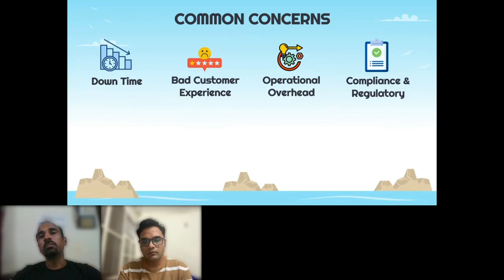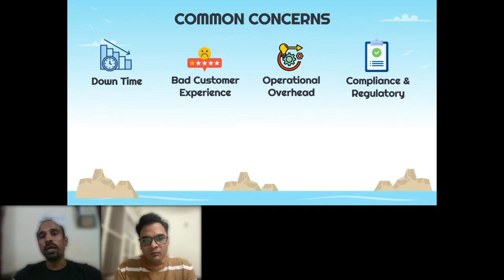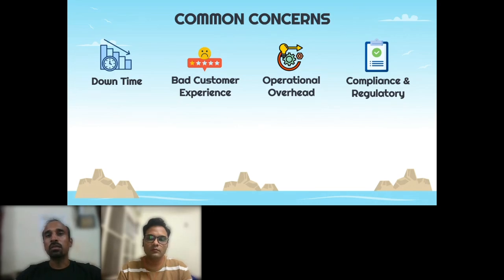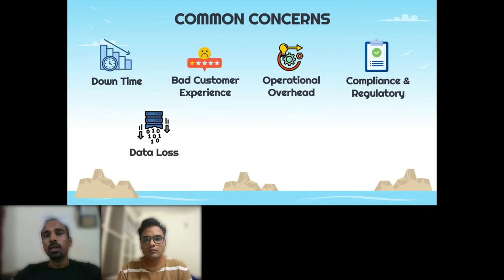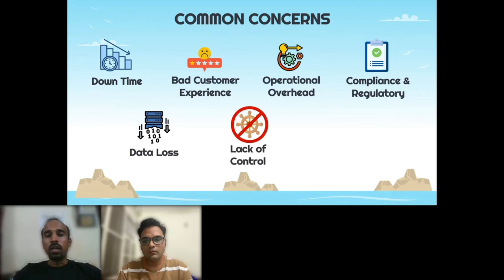Another concern is compliance and regulatory requirements. In some public cloud infrastructures, you cannot run certain chaos attacks — like simulating heavy load or breakdown tests — because that would violate their SLA. If applications have such compliance requirements, that prevents simulating attacks in production. Data loss is yet another concern: if a customer is in the middle of a business transaction and a failure is introduced on, say, the payment gateway, the customer gets a bad experience and data about their transaction could be lost.